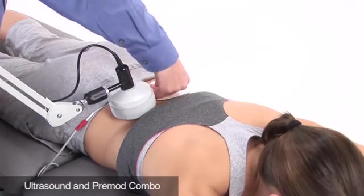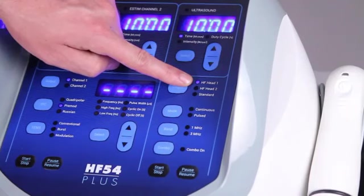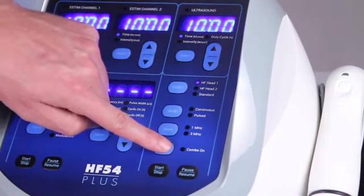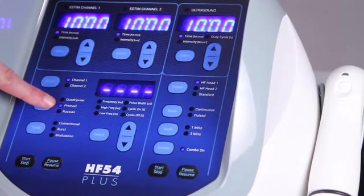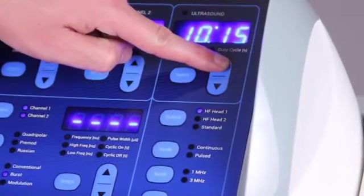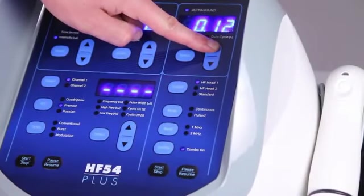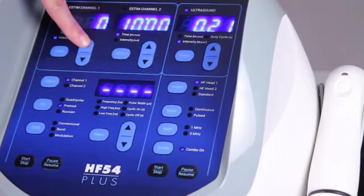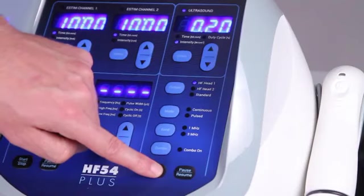With the HF head one sound head selected, press combo to enter combination mode. E-stim channel one will light up with pre-mod already selected. Set your time with either the ultrasound or the e-stim channel arrows and press start. Adjust the intensity for ultrasound and pre-mod respectively using the up and down arrows. Press the start/stop button at any time to stop the treatment.